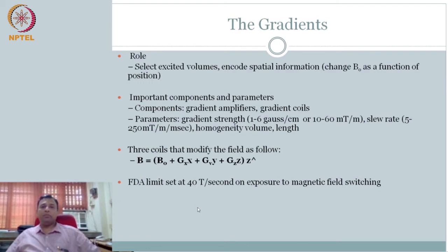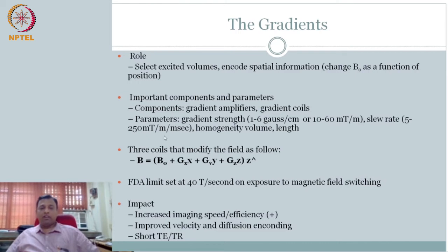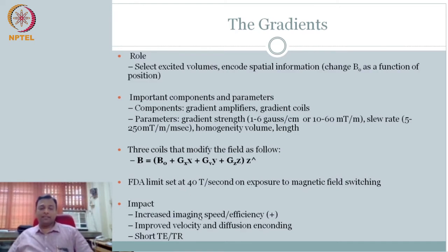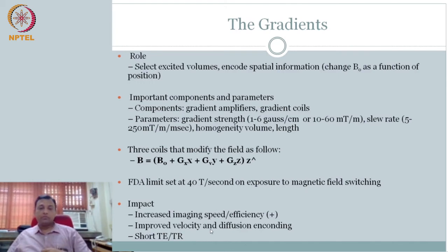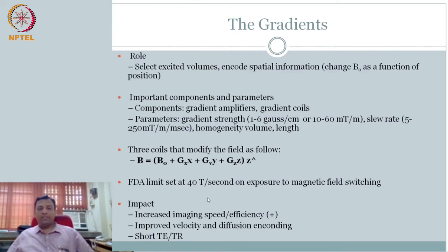The advantage of having these gradient coils — having these limits — the more the better it is. This increases the imaging speed, so you can capture faster changes. You want this to be as high as possible, but there are limits. It will enable you to do fast switching, but you have to operate within those limits.